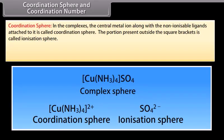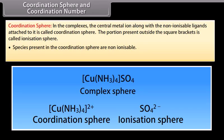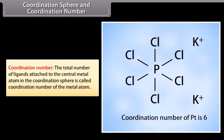Coordination Sphere and Coordination Number: In complexes, the central metal ion along with the non-ionizable ligands attached to it is called the coordination sphere. The portion present outside the square brackets is called the ionization sphere. Species present in the coordination sphere are non-ionizable. The total number of ligands attached to the central metal atom in the coordination sphere is called the coordination number of the metal atom.